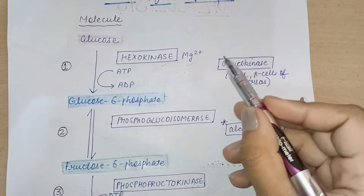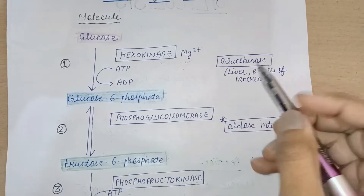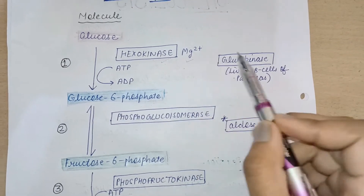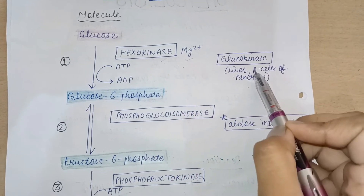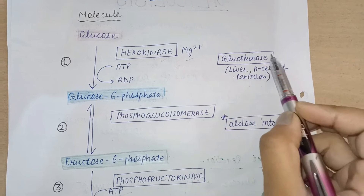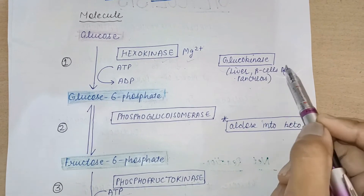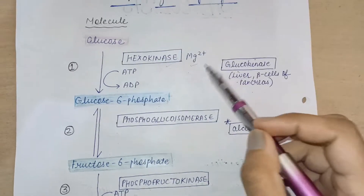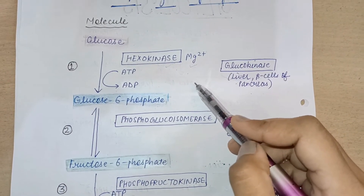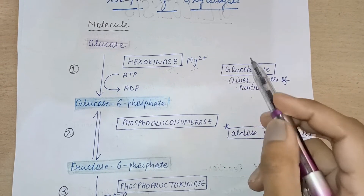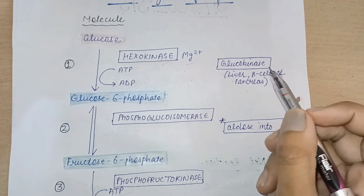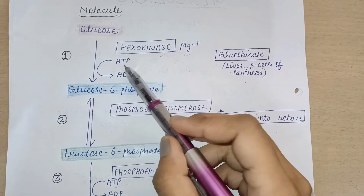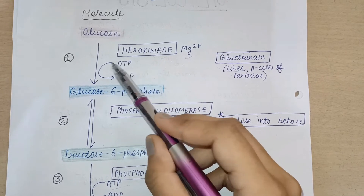One thing to remember is that in the liver and beta cells of the pancreas, instead of hexokinase, the enzyme glucokinase is present. Glucokinase is specific for the phosphorylation of glucose, whereas hexokinase can undergo phosphorylation of glucose, galactose, or mannose.